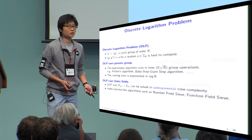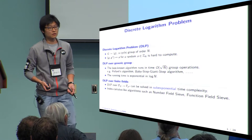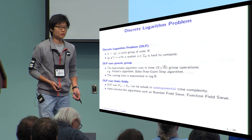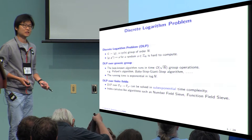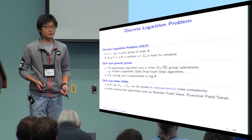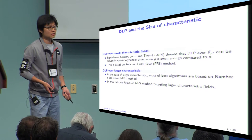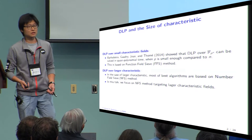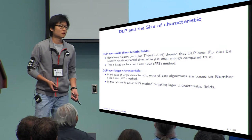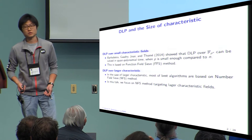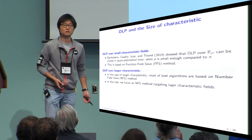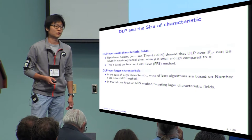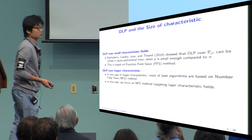However, if the DLP is defined over a finite field, we can solve it in sub-exponential time. For this, we have index-calculus algorithms such as number field sieve and function field sieve. The complexity of DLP usually differs by the size of characteristic P. If the DLP is defined over a small characteristic field like binary field or ternary field, then we have a quasi-polynomial time algorithm based on the function field sieve method.